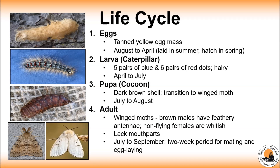Adult gypsy moths typically emerge in July and August. Males are brown with feathery antennae. The whitish females are heavy and do not fly. Adults do not have mouth parts — their sole purpose at that point is to mate and lay eggs.